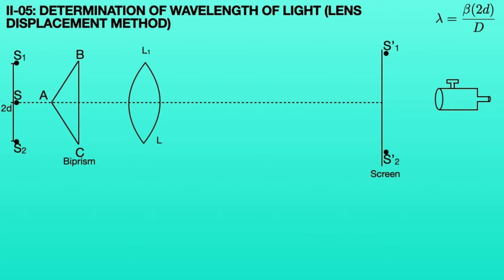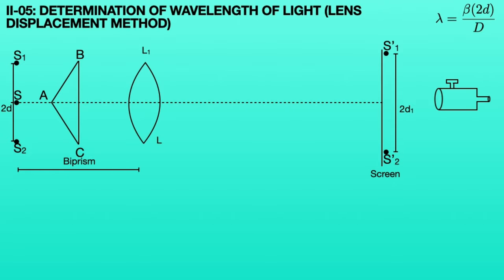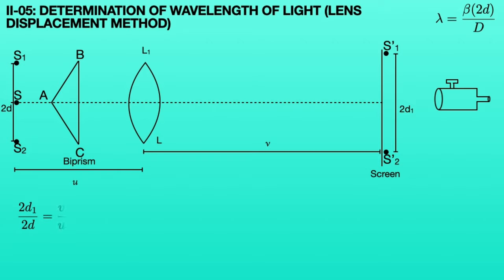These virtual image distances can be measured with a microscope by moving up and down. If the distance between these virtual images is 2D1, the distance between the sources and the lens is U, and the distance between the lens and the screen is V, then by using the lens displacement method we can write: 2D1 divided by 2D is equal to V divided by U. This is the first equation.